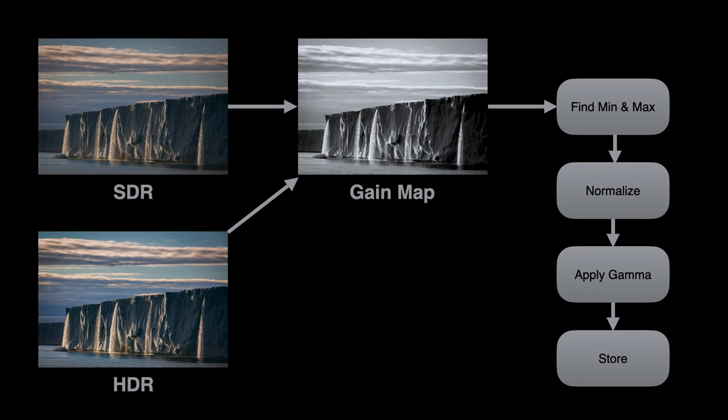Once you've done that, you have a normalized version of the gain map in the zero-to-one pixel range that you can then scale to any n-bit integer coding range, like 8 bits or 10 bits.